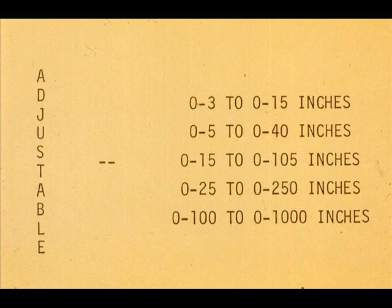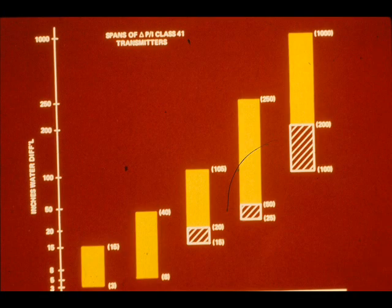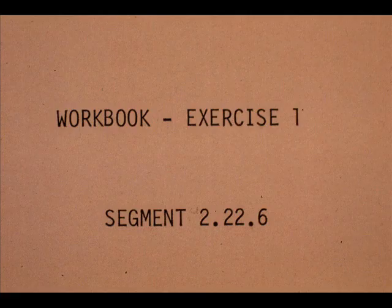Five ranges are available in the Honeywell Model 411 Delta P transmitter. The ranges cover spans from 0 to 3 to 0 to 1,000 inches of water. The ranges are shown graphically here. Now work exercise number one in your workbook.